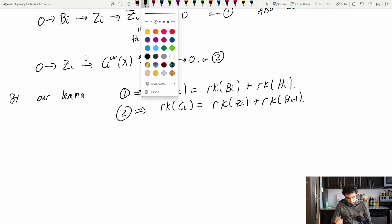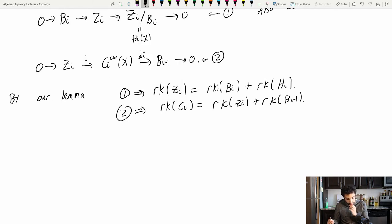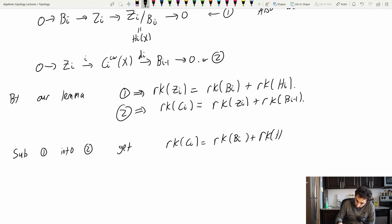All right, what's that common term that occurs in both of them? It's this rank of Zi. So if I sub 1 into 2, I get that the rank of Ci is the rank of Bi plus the rank of Hi plus the rank of Bi minus 1.